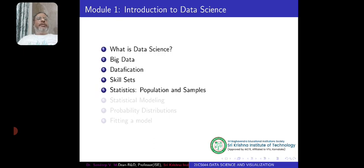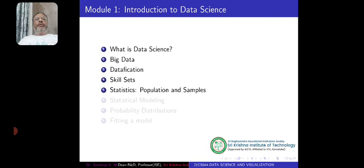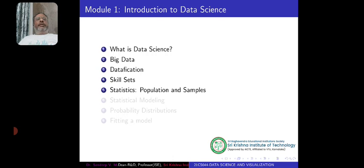Statistics basically deals with population — the actual data — and then samples. When working with very large data, we cannot use the whole dataset. Instead, we collect some sample examples and verify them. For instance, if you are cooking rice, you don't check every grain — you just take one or two and find whether it's cooked. Similarly, there is no need to work with the whole population; just a sample can be used to get the information. All this is possible through statistics.